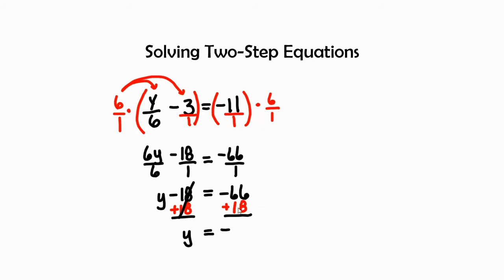So, 66 and 18, we're going to subtract those two numbers from each other, and we are going to get 48. So, our answer is y equals negative 48.